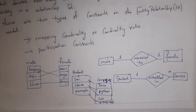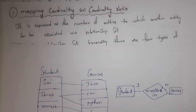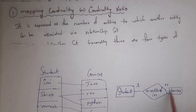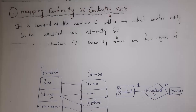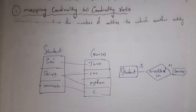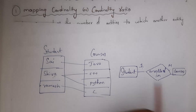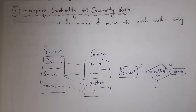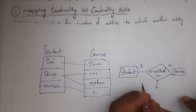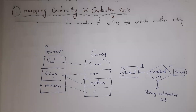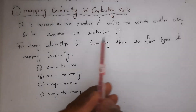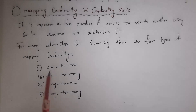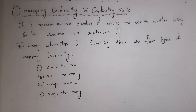I will explain both in detail. First, mapping cardinality is expressed as the number of entities to which another entity is associated via a relationship set. Here, there are two entity sets — student and courses — and I am establishing a relationship between them, so we call it a binary relationship set. For a binary relationship set, there are four types of mapping cardinality: one-to-one, one-to-many, many-to-one and many-to-many.